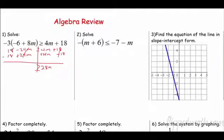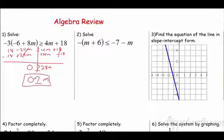That's gone. Negative 18 minus 18 is 0. Divide both sides by 28. And come on now. That's going to be an easy one. M is less than or equal to 0.